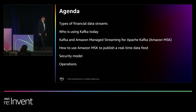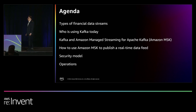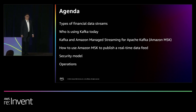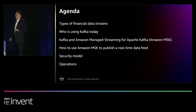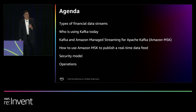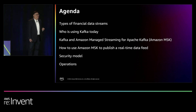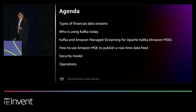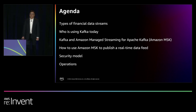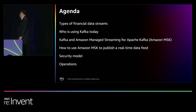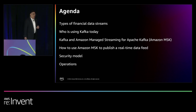Here's what we've got lined up for this session. We'll first go through the different types of financial data streams, then get into who is using Kafka today and why it's gaining traction in the financial services industry. After that, we'll talk about Amazon Managed Streaming for Kafka, or MSK, the service we built to make deploying Kafka easier on AWS. Then Diego will talk about how you can use MSK to publish your real-time financial data feed and monetize it. We'll also cover the security model — authentication and authorization — and finally, operational aspects like monitoring and automated deployment.